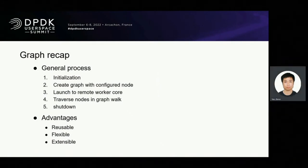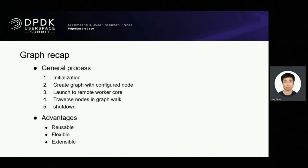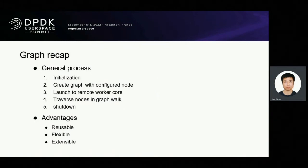The architecture of Graph abstracts the data processing as nodes and links them together to create a graph. It can enable modular data processing from simple layer 3 forward to complex workloads, like firewalls, load balancer, etc.